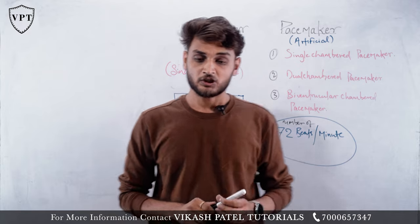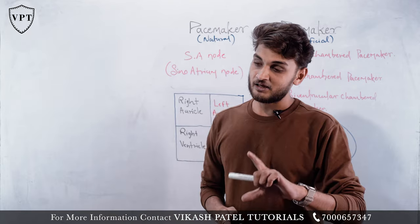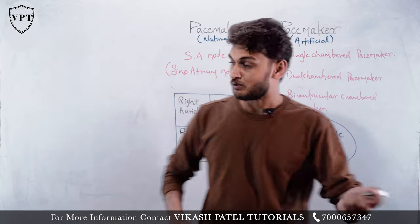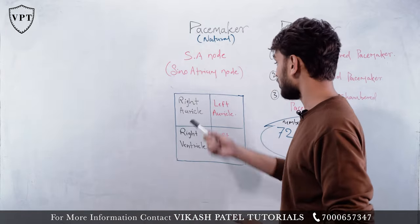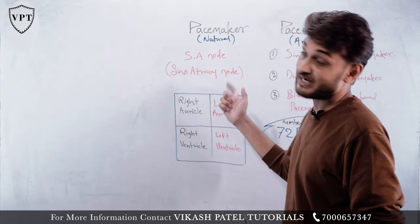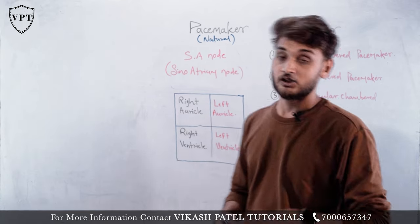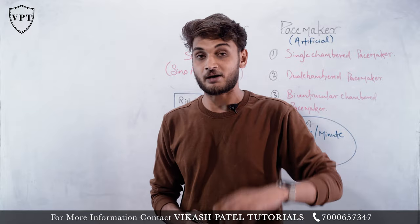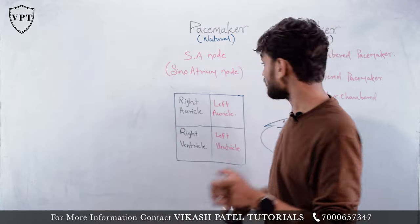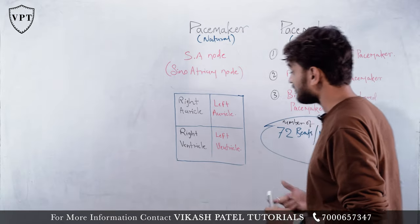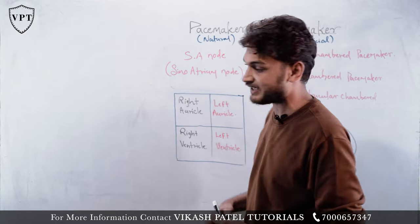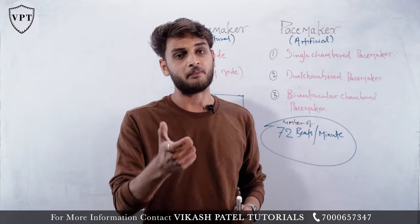For the single chambered pacemaker: if a person has a problem in the right auricle, left auricle, right ventricle, or left ventricle, potential is given to that specific chamber through the artificial pacemaker. For the dual chambered pacemaker, electrical potential is delivered to two chambers — such as the right auricle and right ventricle.